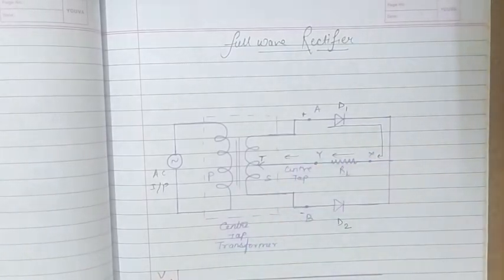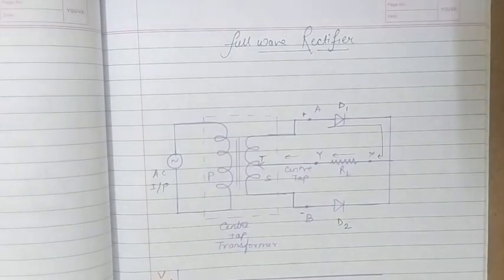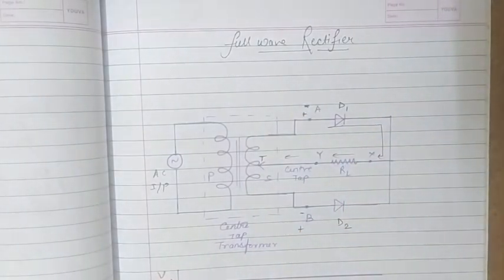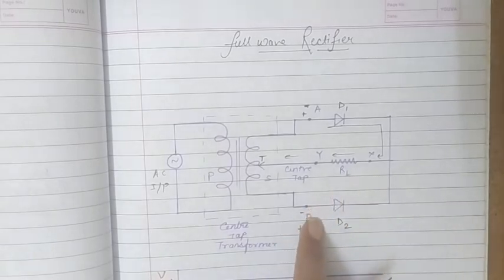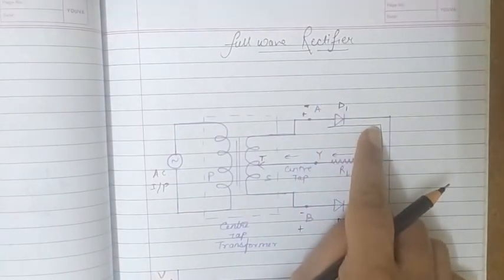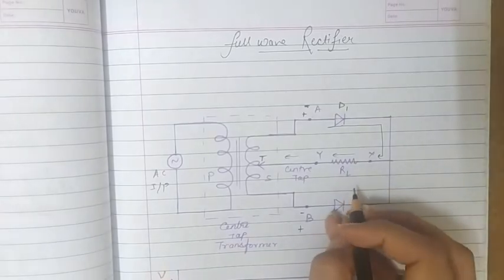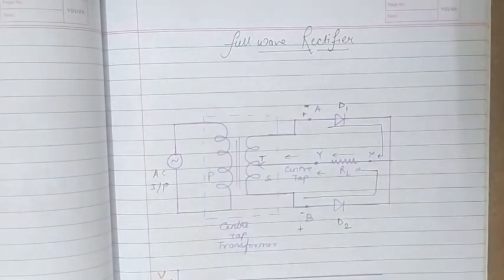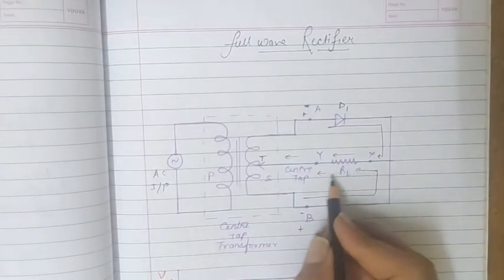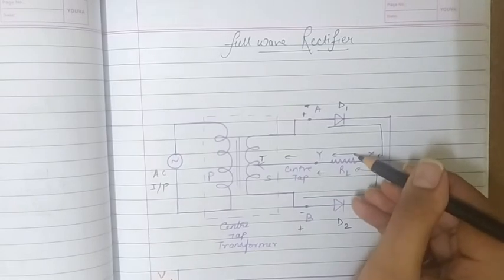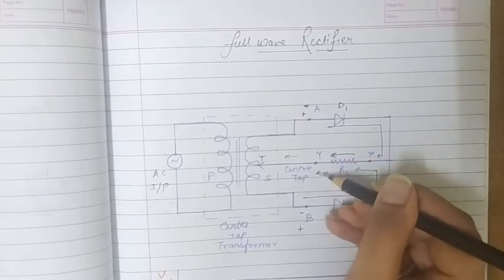During the positive half cycle, diode D1 conducts and we get the output across RL. After phase reversal, during the negative half cycle, A becomes negative and B becomes positive. Now D2 is forward biased while D1 becomes reverse biased. D2 conducts, current flows from P to N through D2, and we get the output across RL. The output in both cases is in the same phase.